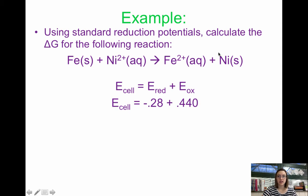Reduction is Ni2+ to Ni, that comes directly off the chart. For oxidation, iron to iron 2+, because it's oxidation, that's the opposite of reduction, we flip the sign. So the overall cell potential is 0.16 volts.